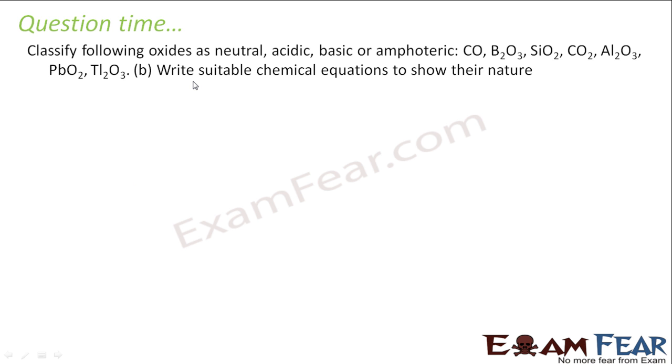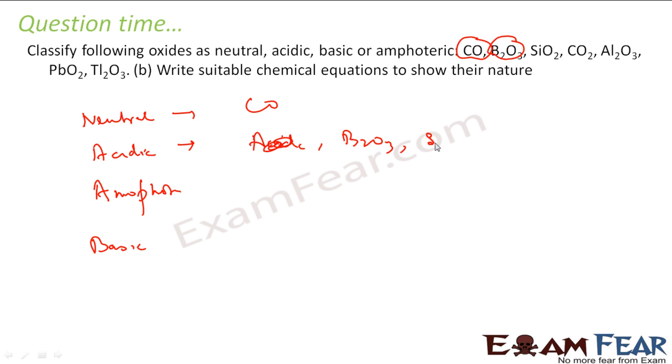If you classify these oxides as neutral, acidic, basic, or amphoteric: carbon monoxide, as we told that due to strong bond energy of CO, it is neutral. Let me first write here: neutral, acidic, then you have amphoteric, and then you have basic. Carbon monoxide will be neutral. Then you have Al2O3. Al2O3 will be acidic. The moment you go down, the basic nature increases. Silicon oxide will also be acidic. Carbon dioxide will also be acidic.